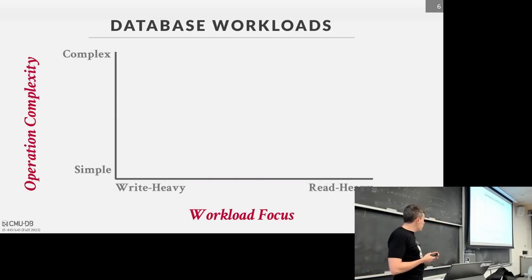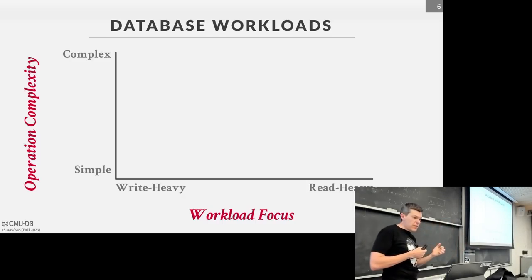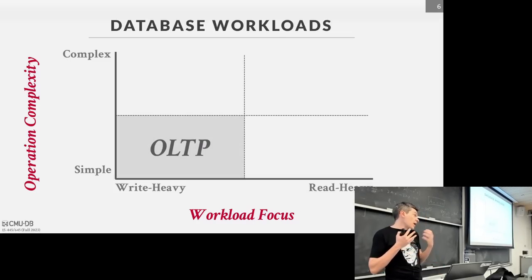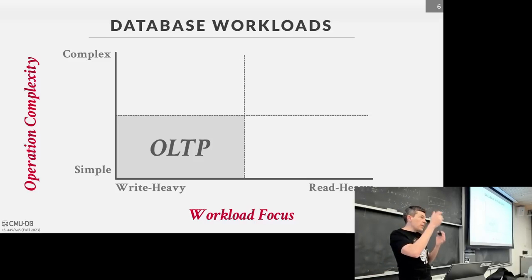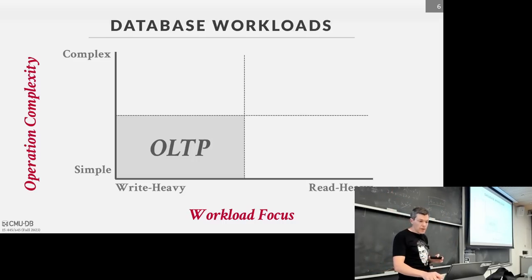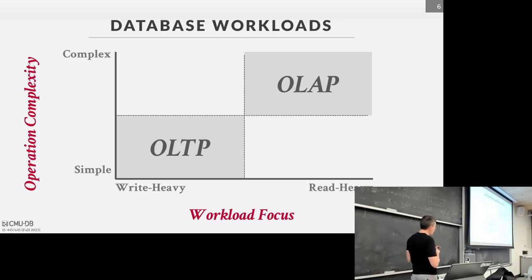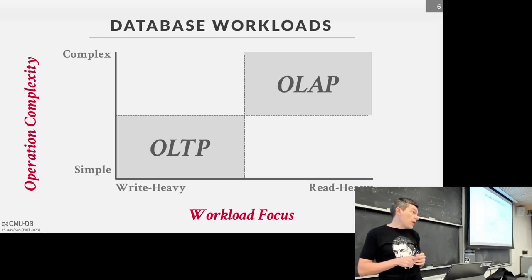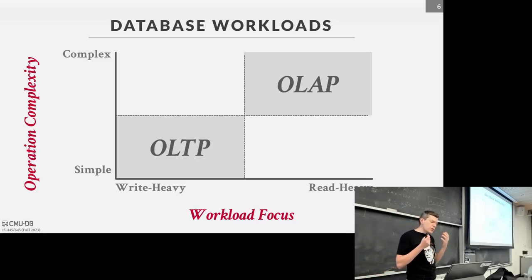Another way to think about the distinction between them is a simple grid where one axis is read-heavy and the other axis is how complex the queries are. OLTP would be in the corner with potentially a lot of updates but very simple queries — like SELECT * FROM the account table WHERE ID equals something. OLAP queries are much more complex reads, like Q9 and Q10 in homework one.